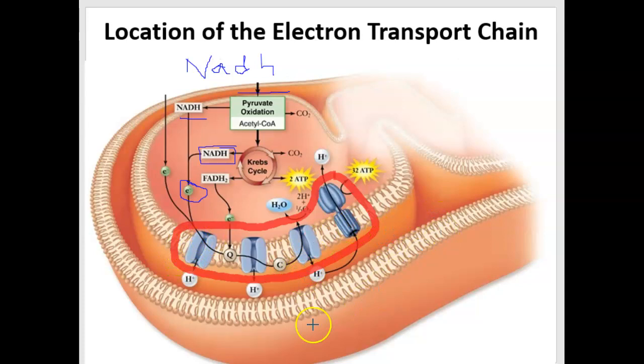Now these electrons move from transmembrane protein to transmembrane protein. So first this one, then to the Q, then to this one, and then to the C, and then to this one. That's where all the electrons go. So as they jump from one to the next transmembrane protein in the chain, that's kinetic energy.